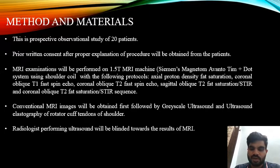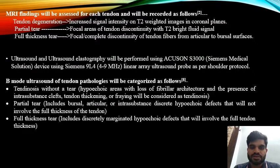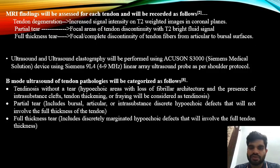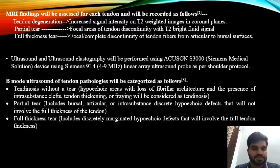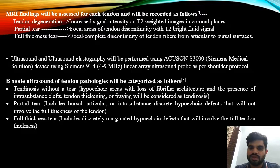The radiologist performing ultrasound was blinded towards the results of MRI. MRI findings were assessed for each tendon as follows: tendon degeneration showing increased signal intensity on T2-weighted images in coronal planes; partial tear showing focal areas of tendon discontinuity with T2 bright fluid signal; and full thickness tear showing focal or complete discontinuity of tendon fibers from articular to bursal surfaces. Ultrasound and elastography were performed using the Acuson S3000 Siemens device using the 9L4 linear array ultrasound probe as per shoulder protocol.